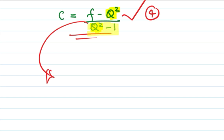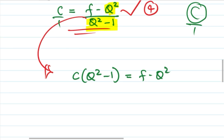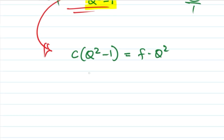You need to remove the denominator by multiplying both sides. Do cross multiplication: C times (Q squared minus 1) equals F minus Q squared. Let's remove the bracket: C times Q squared minus C times 1 equals F minus C times Q squared.